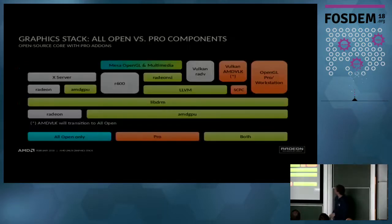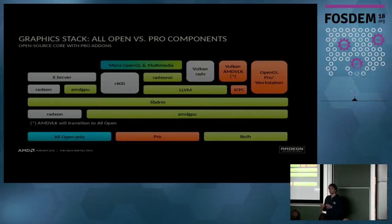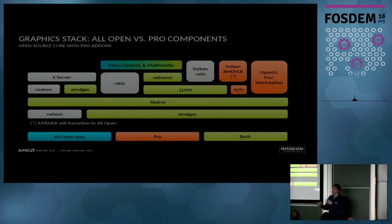Looking at this picture from the perspective of what's in the all-open core and what's in the pro add-on: the all-open core consists of everything in green, and all that green stuff will also be present if you're using the pro add-on. The pro add-on contains the workstation OpenGL driver, but multimedia will still use the Mesa code. Currently it contains this Vulkan driver because of the compiler part, but the plan is to transition that to the fully open-source LLVM basis.